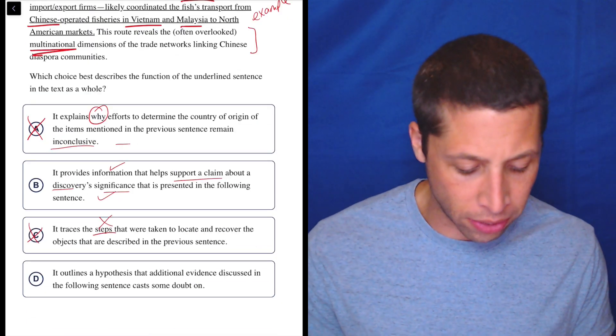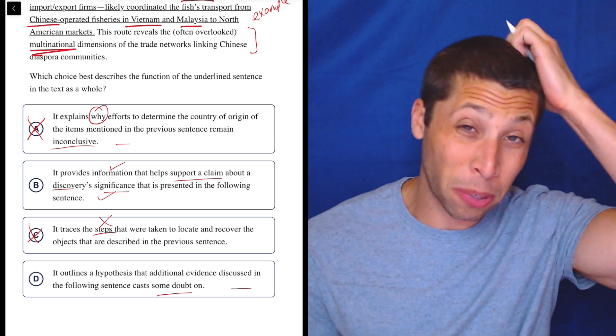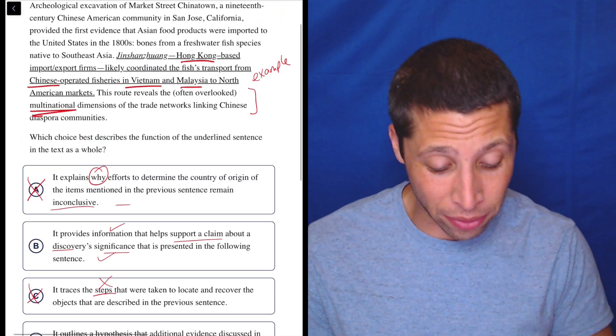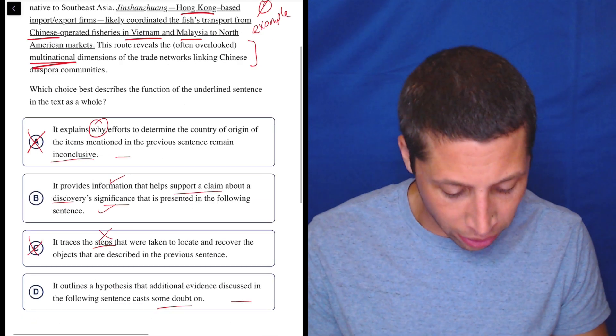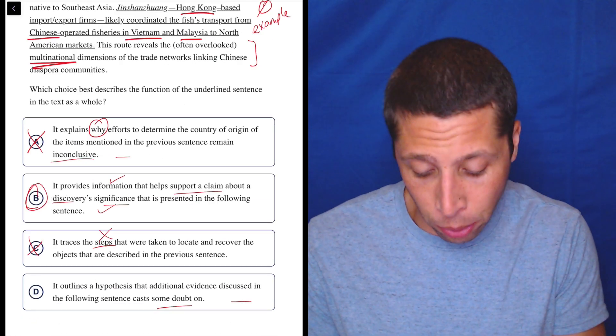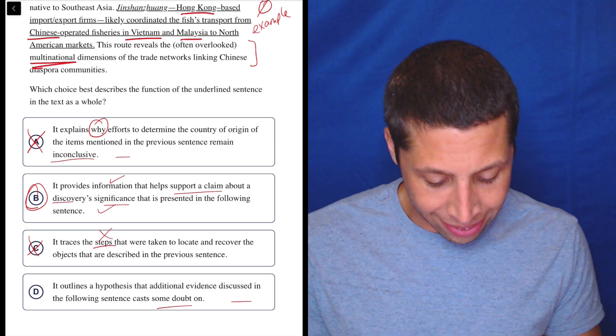D, it outlines a hypothesis that additional evidence discussed in the following sentence casts some doubt on. Again, just dumb summary. That seems pretty negative. This doesn't seem like a negative thing. This just seems like a neutral example. It doesn't have any sort of connotation as far as I can tell. So that seems weird. So honestly, at that point, I would pick B. If I wanted to prove D a little bit more wrong, it's not a hypothesis.